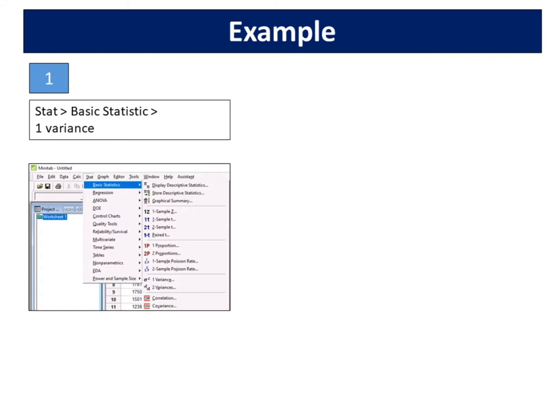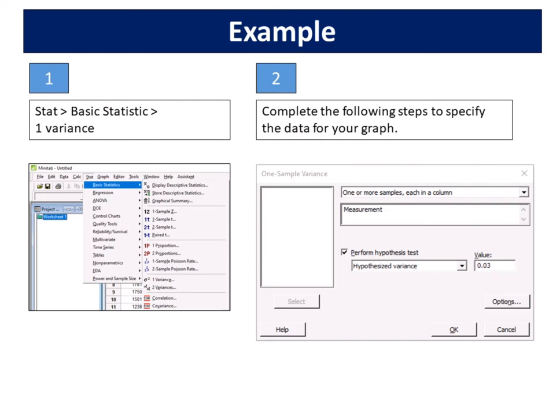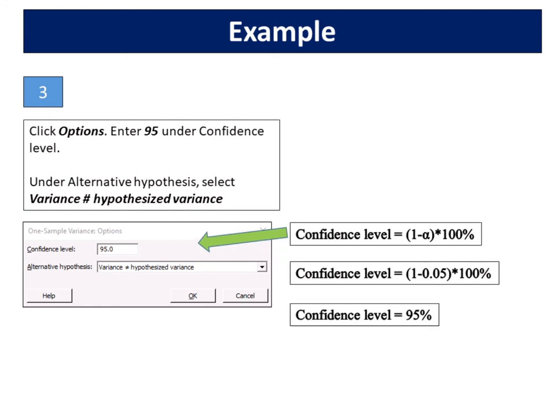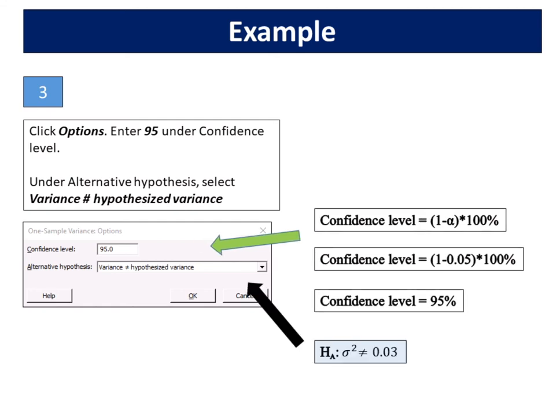Choose stat, basic statistics, one variance. In hypothesized variance, enter 0.03. Click options. Enter 95 under confidence level. Confidence level is 1 minus alpha multiplied by 100. Under alternative hypothesis, select variance not equal to hypothesized variance.